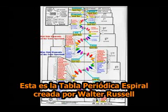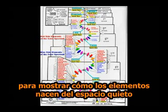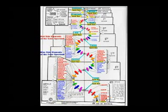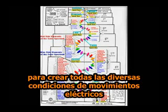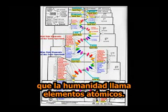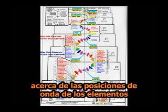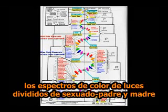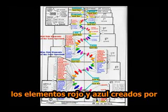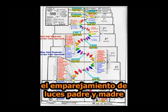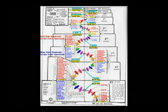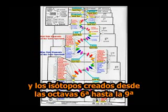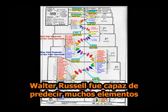This is the spiral periodical table created by Walter Russell to show how the elements are born from the stillness of space and in-wound octave by octave from the inert seed gases to create all of the various conditions of electric motions which mankind calls the atomic elements. This chart is filled with information about the wave positions of the elements, the divided color spectrums of the sexed father and mother lights, the red and blue elements created by the imbalanced pairing of father and mother lights, their positions within each octave wave, and the isotopes created in the sixth through the ninth octaves.